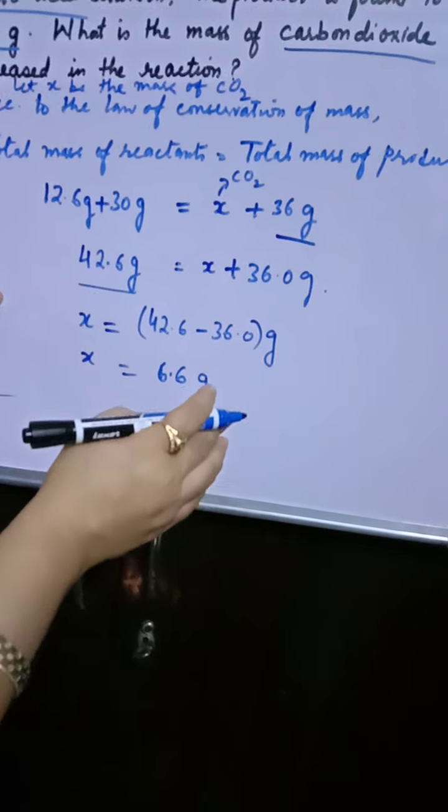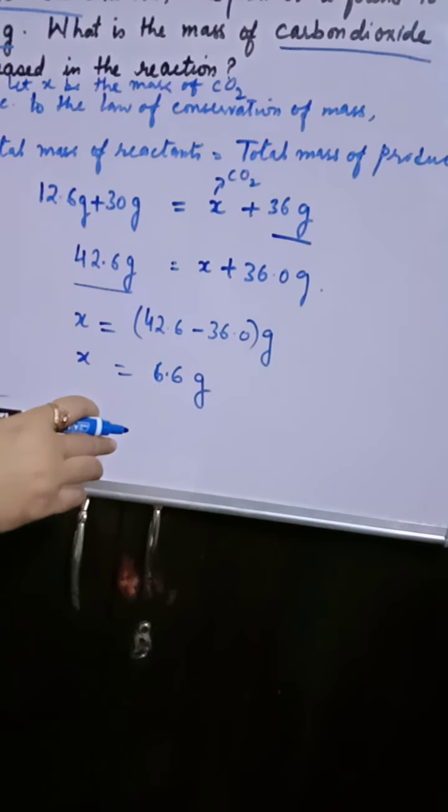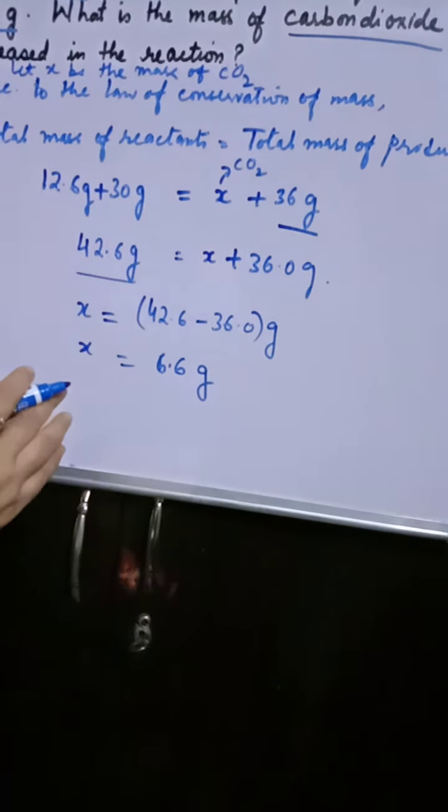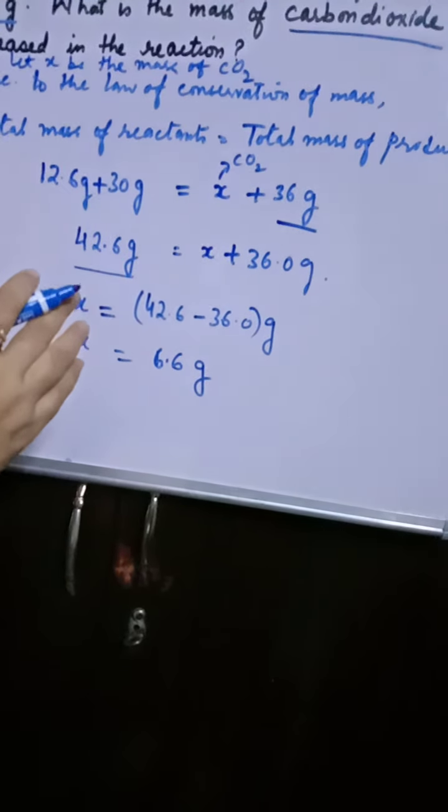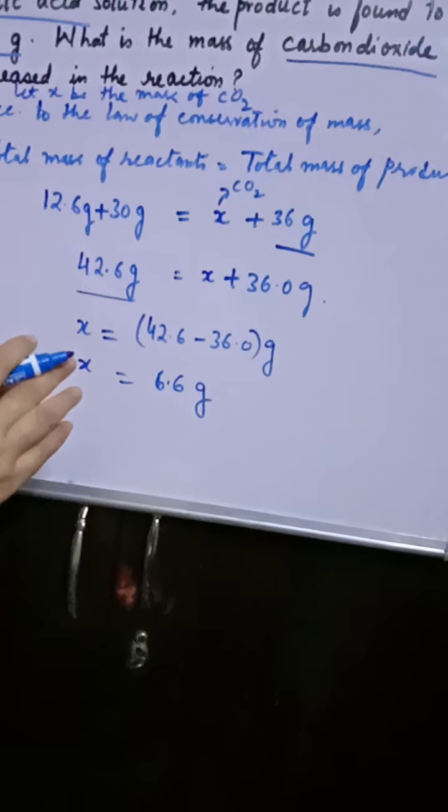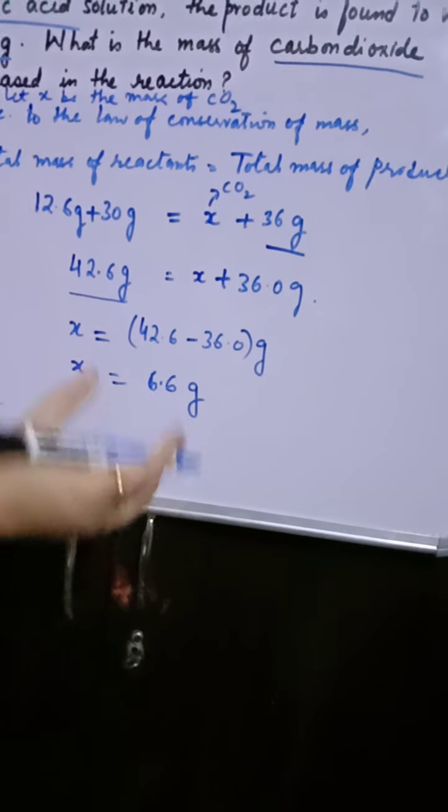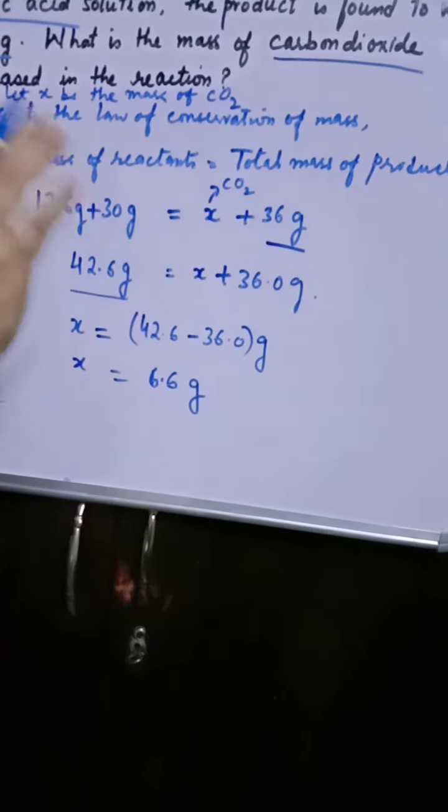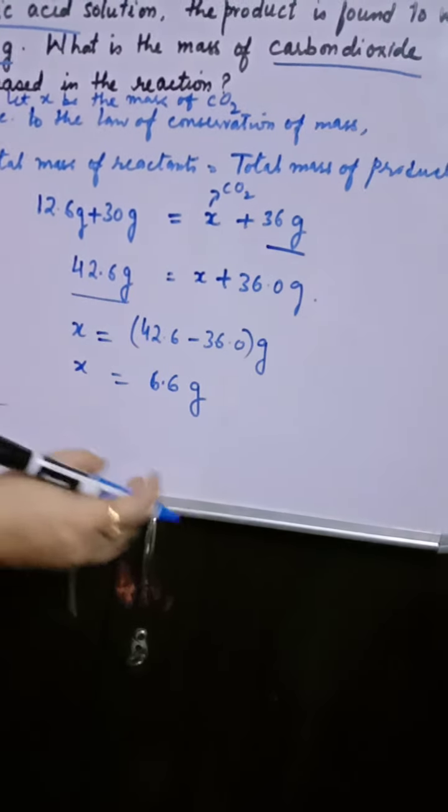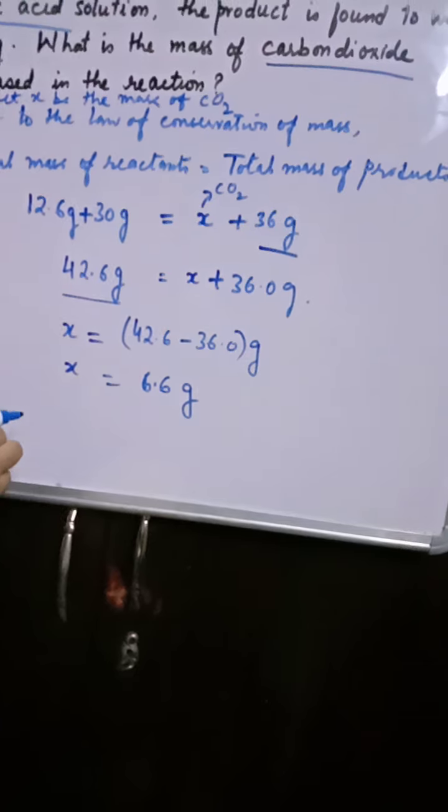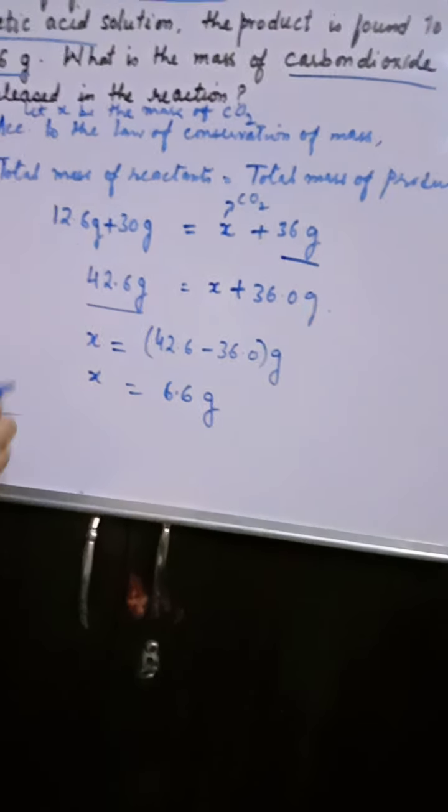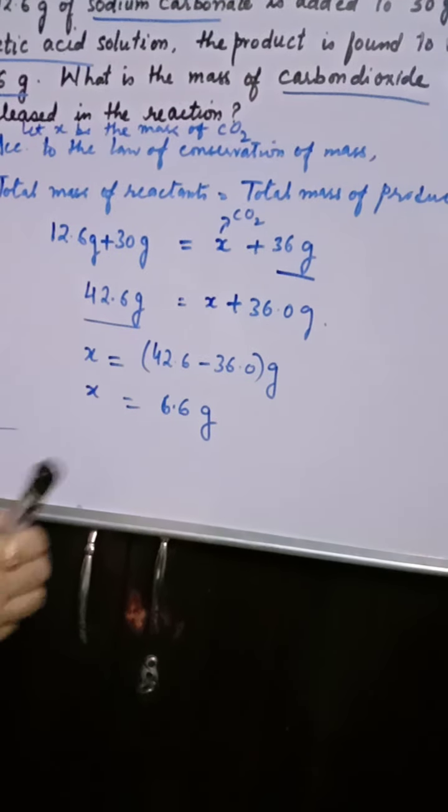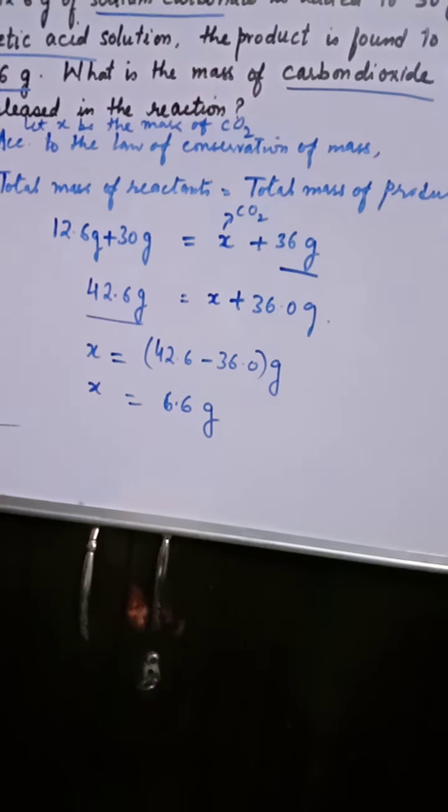Agar aap se yahi pooch le jata hai ki what went wrong in this reaction? Why? Why the total mass of reactants is not equal to total mass of products? You can tell that this reaction was opened, in this reaction. It had no means to trap the gas, so the gas was escaped. And that is why we came out with the wrong reading. So these are the two numericals that I want to discuss with you. Then I will start law of constant proportions.